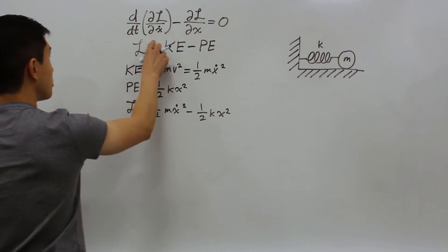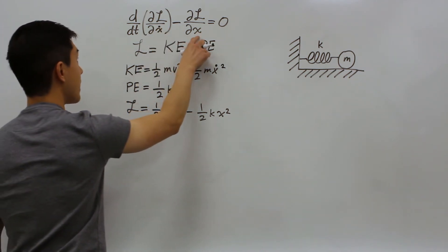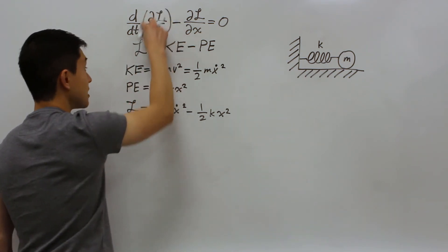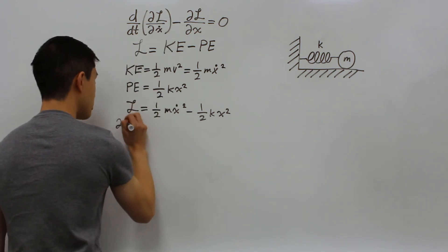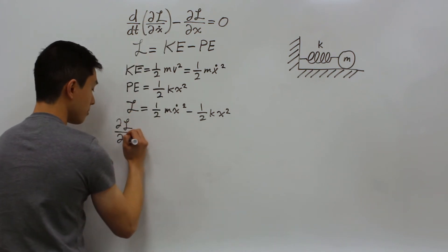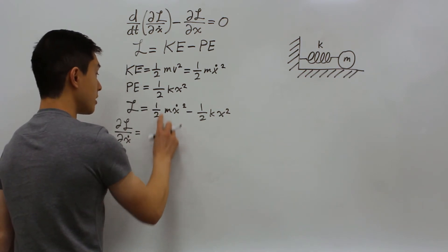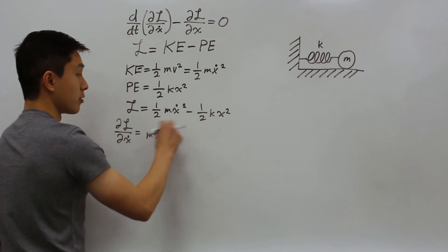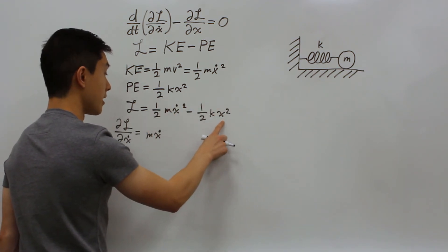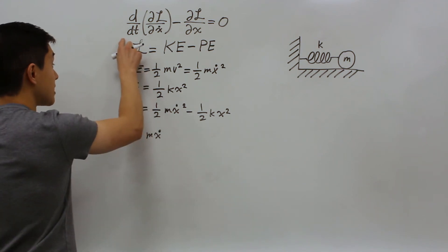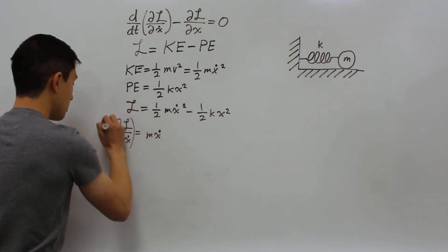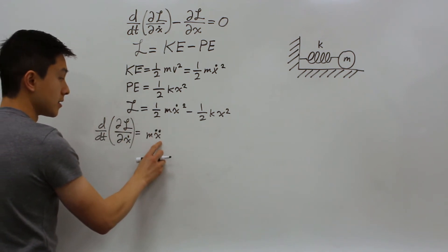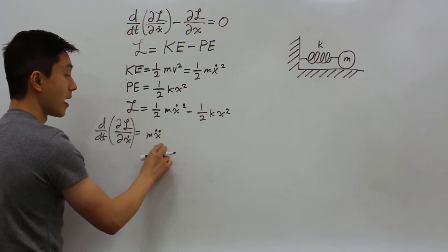We can now find the partial derivatives of Lagrangian with respect to x dot and x, and then find the time derivative of this first term. So let's do this inside term of the parentheses. The partial Lagrangian with respect to x dot is going to be just m times x dot. As the first term is the one you can derive, the second term goes to 0 as there is no x dot in that term. We can then find the time derivative of this whole term, and all we have to do is add a second dot above the x, as the time derivative of mx dot is just mx double dot.